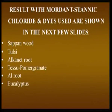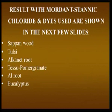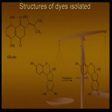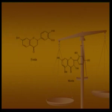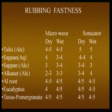Some results using mordant stannic chloride with dyes — Saponwood, Tulsi, alkanet root, Tesu, Pomegranate, al root, Eucalyptus — show simultaneously mordanted fabrics and their results. The structures of the dyes isolated were alkanin (which on oxidation gave different products), pistein, maurene, and lacaic acid. These correspond to the fastness properties we were examining.